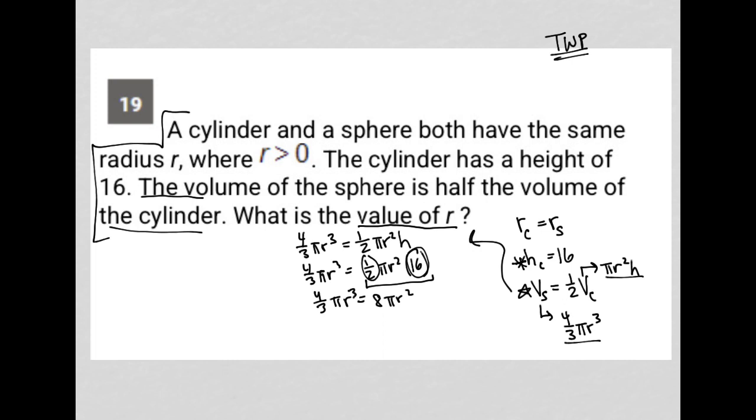I just want R. So I am going to divide. What do I want to do? I want to, let's get rid of the pi's. Let's divide both sides by pi. So that's gone. That's gone. Let's go this way. And I have four-thirds R cubed equals eight R squared.